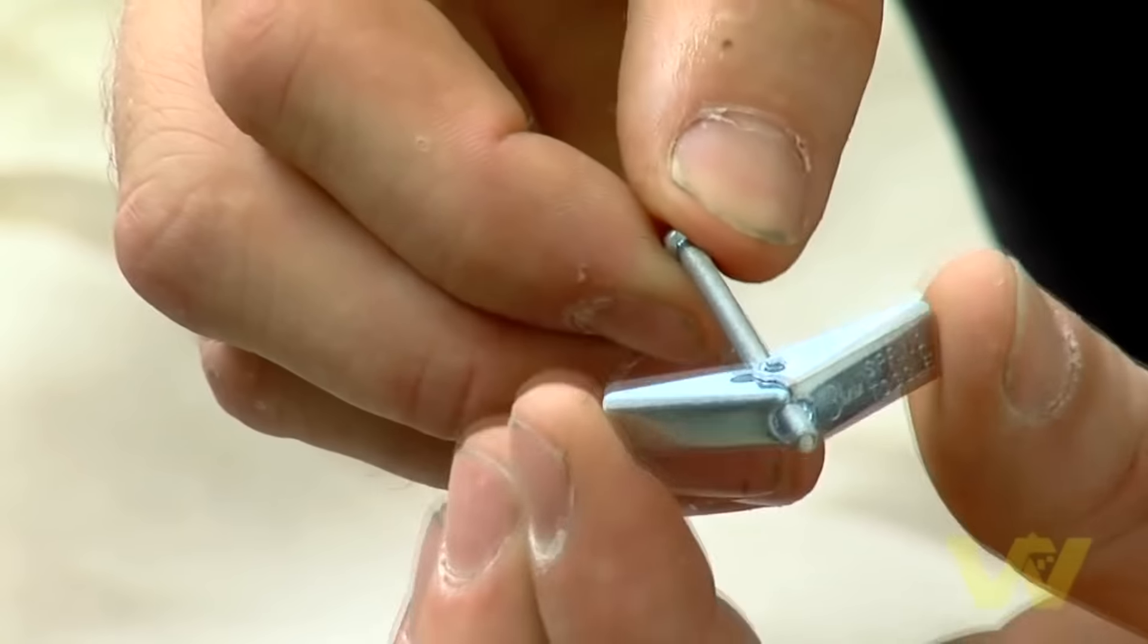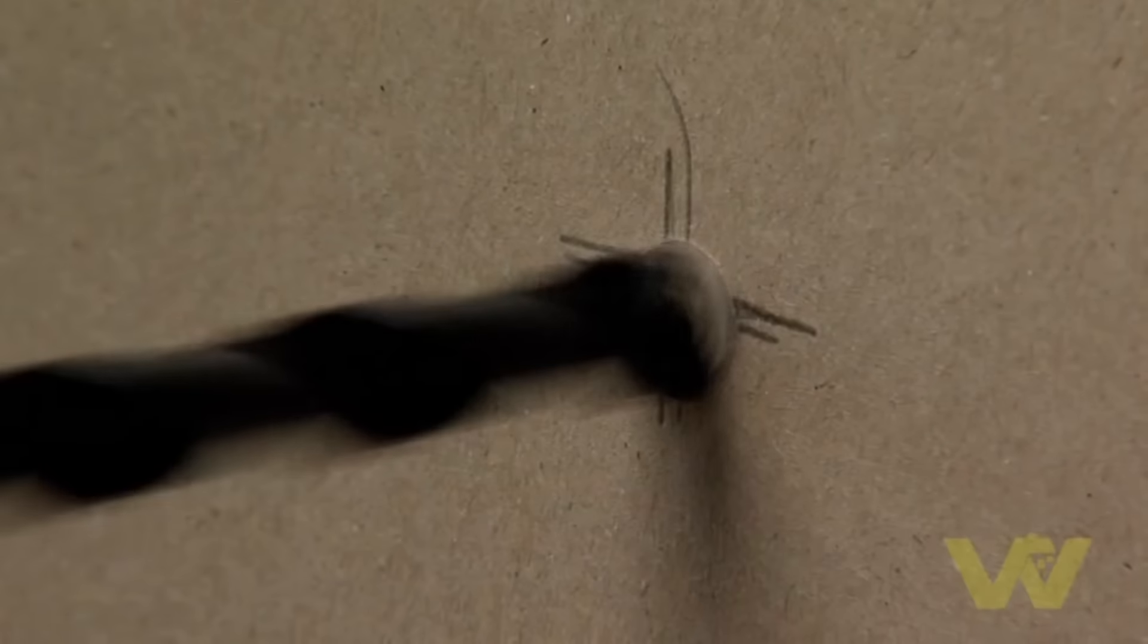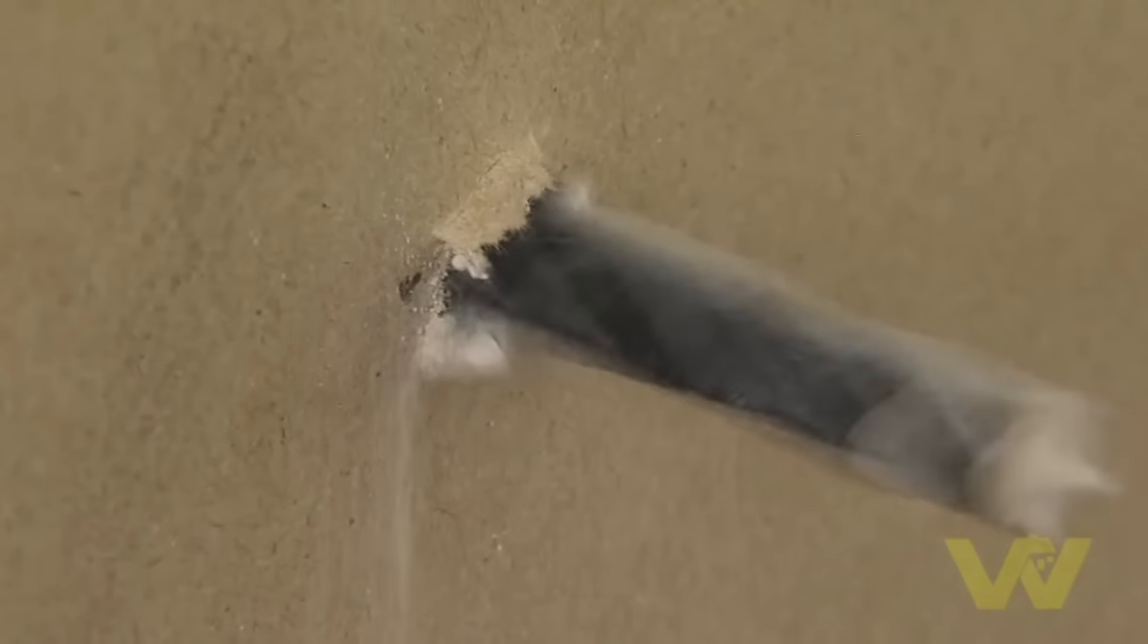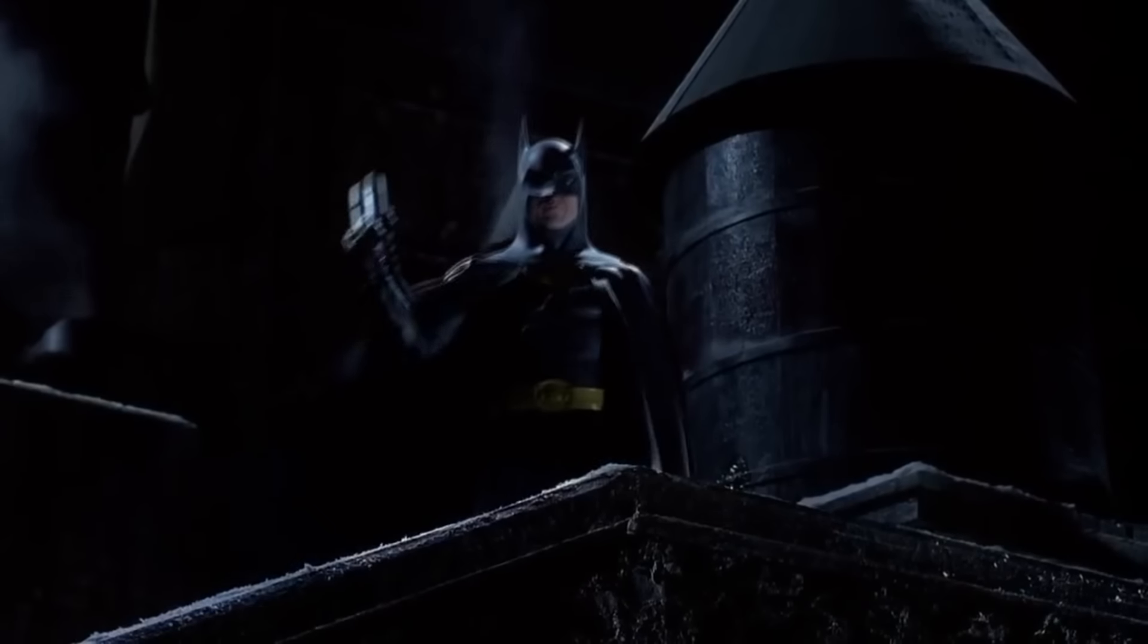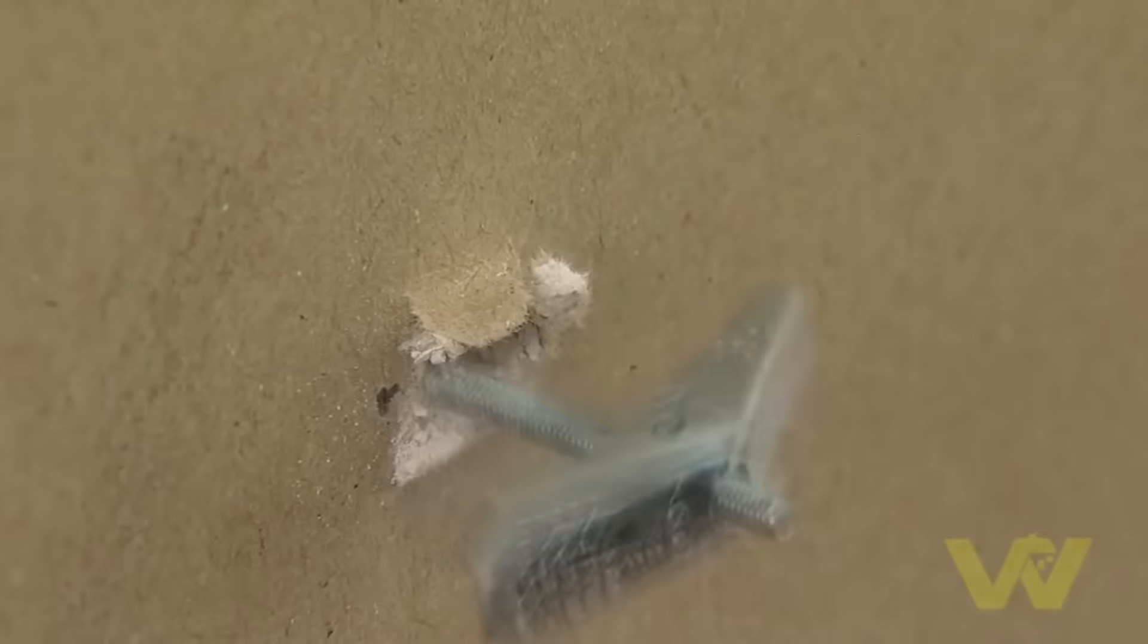Here we have a spring anchor fixing. In order to use this fixing, use the drill bit size indicated on the packet then drill the hole. The fixing slides through the hole and when it gets through to the other side it springs open.